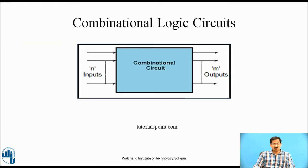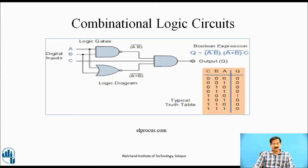This is the block diagram of a combinational logic circuit. At the center, shown as a block, is the combinational logic circuit made up of logic gates, universal gates, and basic gates. It has N inputs and M outputs. This is a simple example of a combinational logic circuit with different gates — on the input side there is a NAND gate with inputs A and B giving output AB bar, and a NOR gate with inputs A and B giving output A plus B bar. These two outputs along with input C are given to an AND gate at the output.